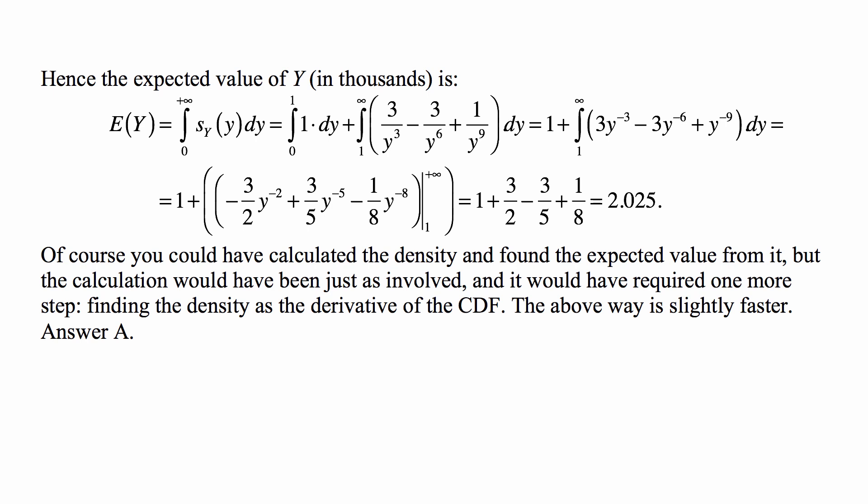At infinity, all terms are 0, so we subtract the values at 1. We get 1, minus (minus 3 halves), so plus 3 halves, minus 3 fifths, minus (minus 1 eighth), so plus 1 eighth. That is equal to 2.025.